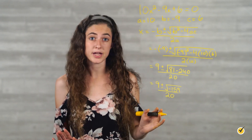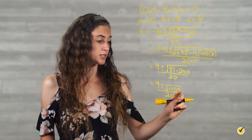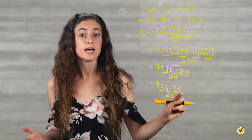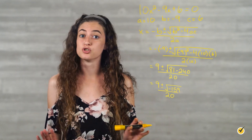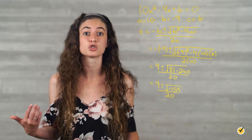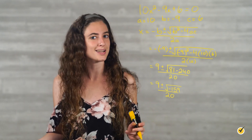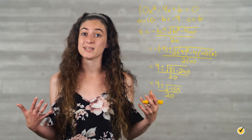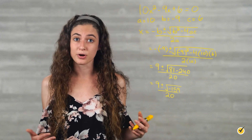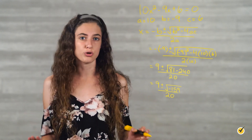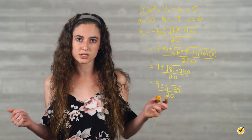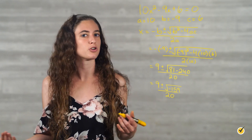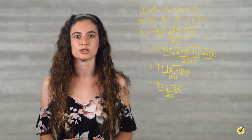We can stop right here because we see our discriminant is negative 159. Negative numbers don't have real square roots because a square is either positive or zero. So remember, if the discriminant is a negative number, then there are no real solutions to the equation. Our answer is that there are no real solutions for x.